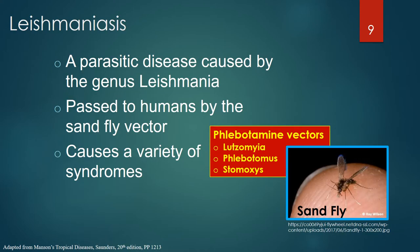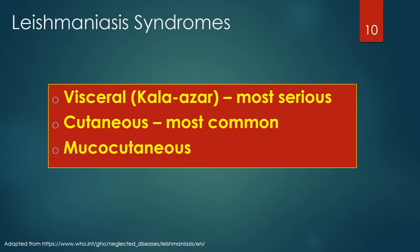Leishmaniasis is a parasitic disease caused by the genus Leishmania and passed to humans by the sandfly phlebotomine vectors, including Lutzomia, Phlebotomus, and Stomoxus. It is not a single disease but a variety of syndromes that vary significantly geographically in signs and symptoms. There are three main types: visceral leishmaniasis, often known as Kala-Azar and the most serious form; cutaneous, the most common form; and mucocutaneous leishmaniasis.